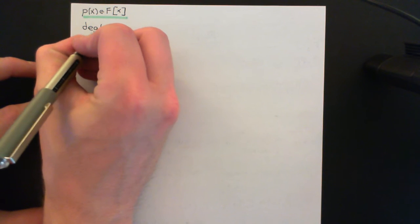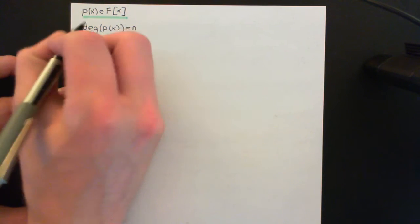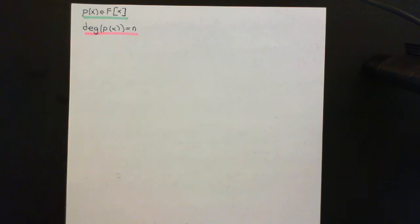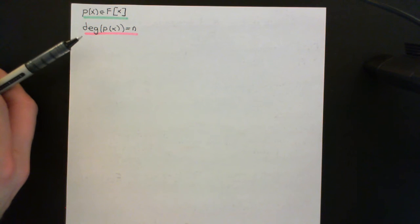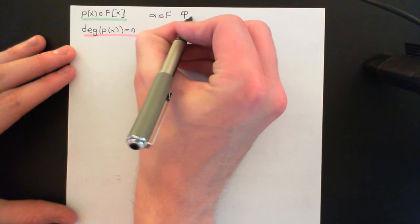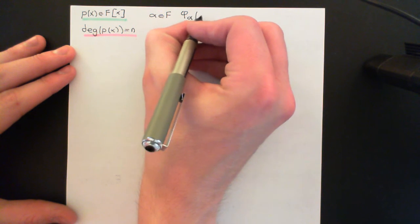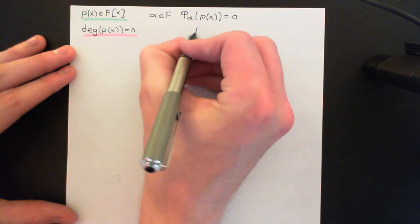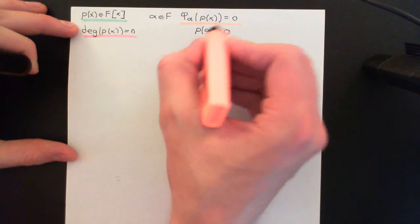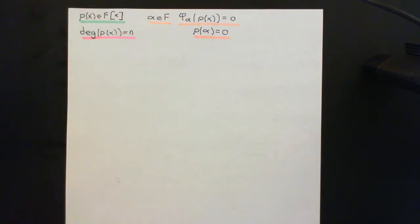This follows very naturally from what we've already discussed. Let's say the degree of this polynomial p of x is little n. The theorem says that p of x can have at most n distinct roots in the field capital F. Remember, a root is an element alpha of the field such that the evaluation homomorphism for alpha on p of x gives zero — more normally written as p evaluated at alpha equals zero.